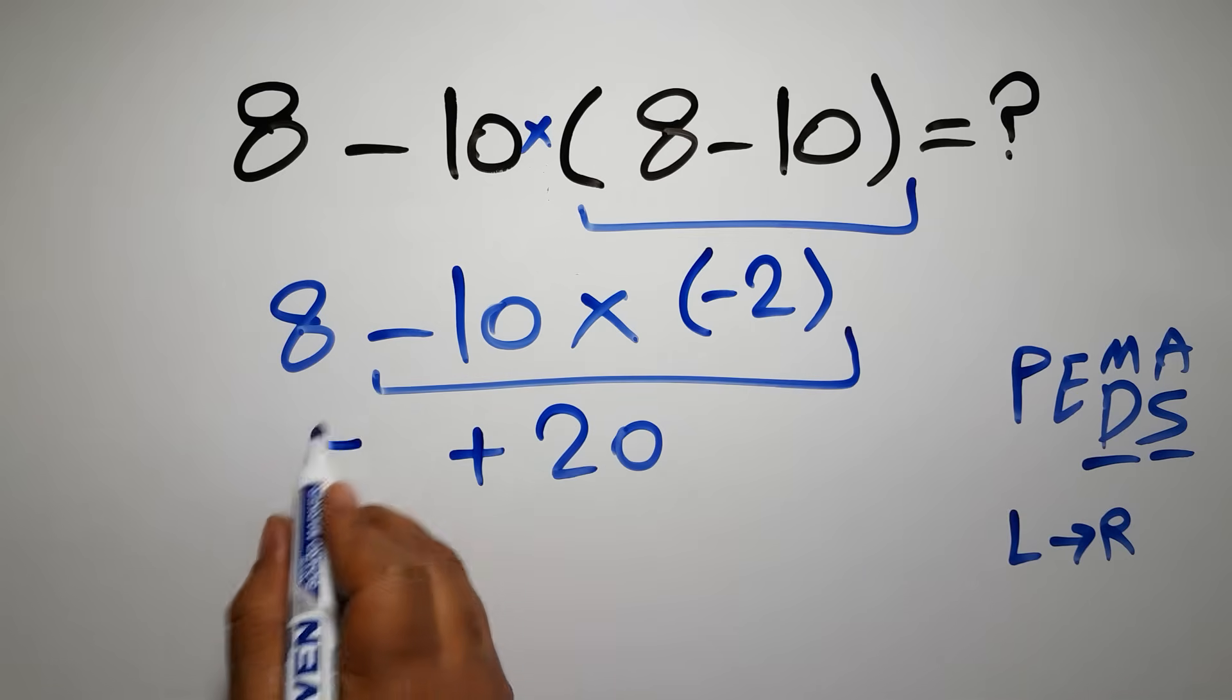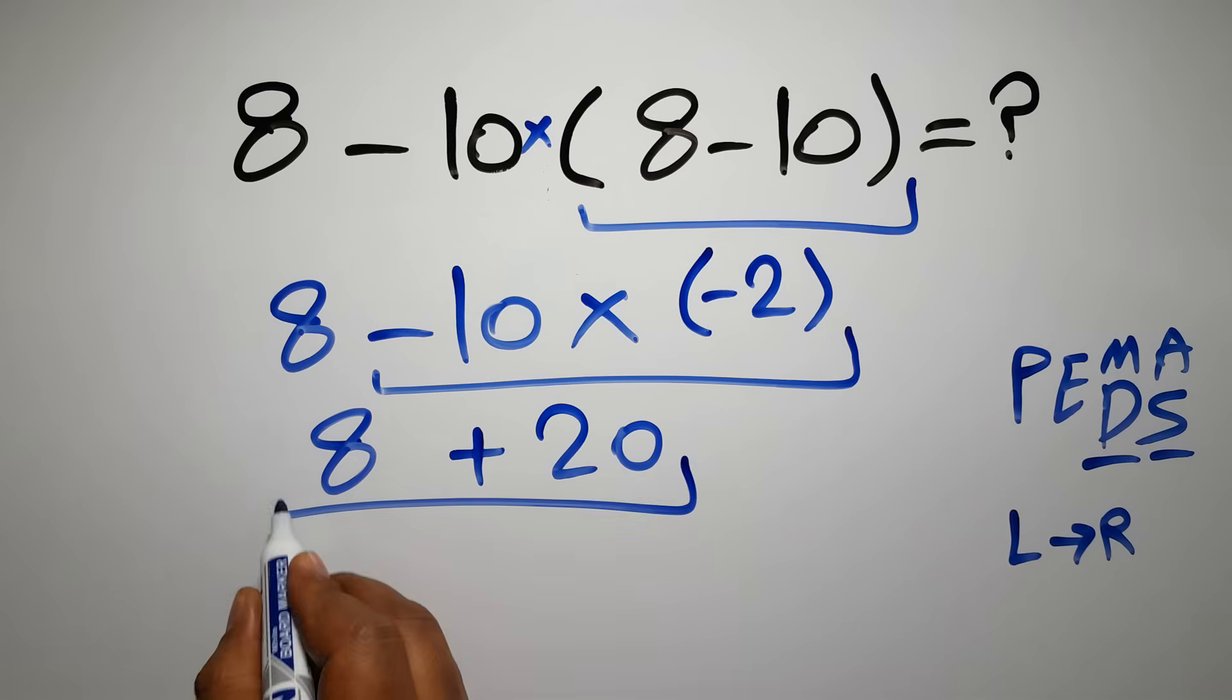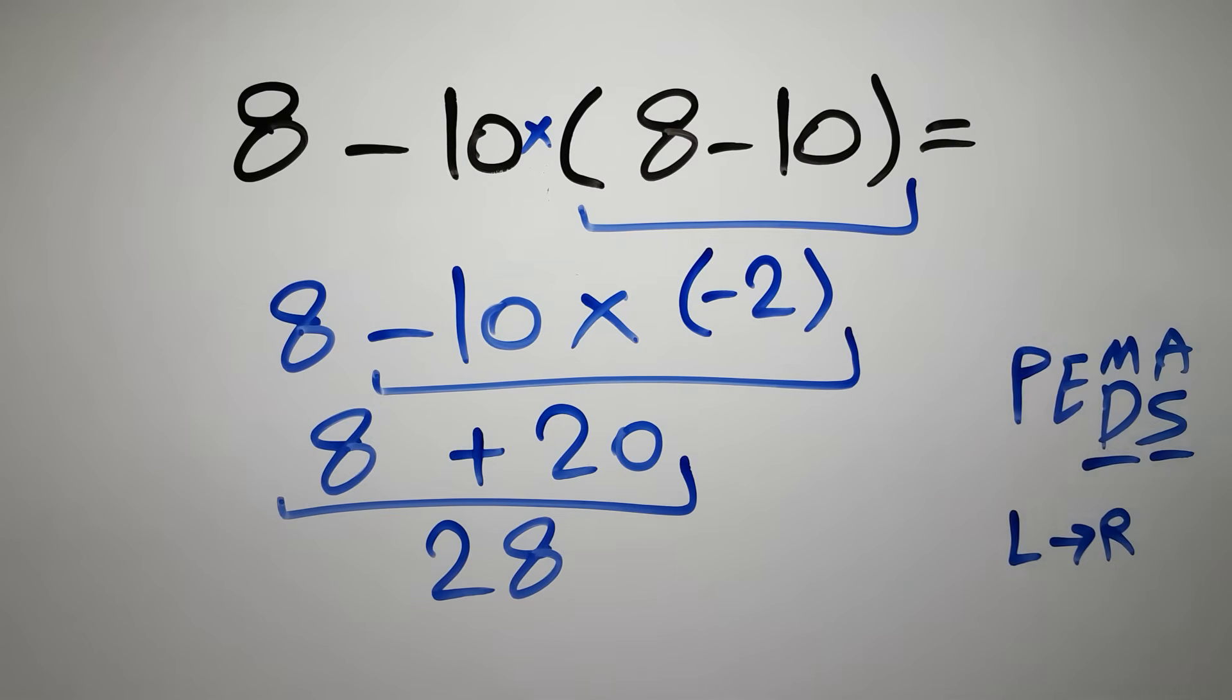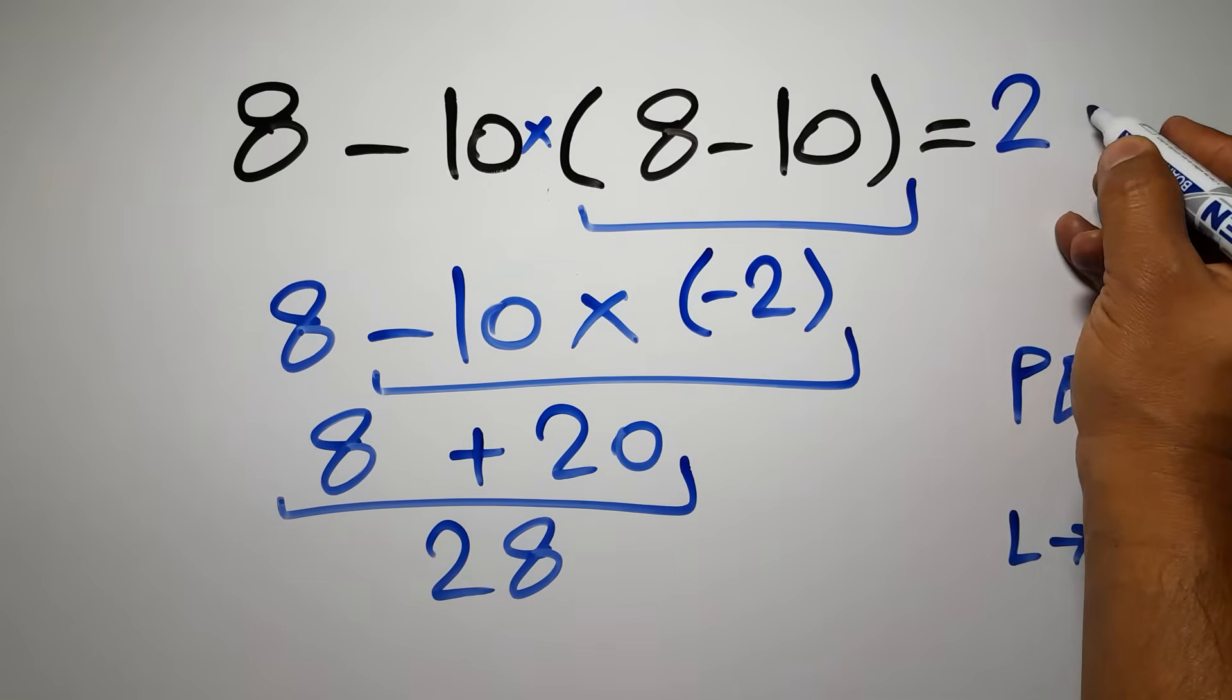So we have 8 plus 20, which equals 28, and this is our final answer to this problem. The correct answer is 28.